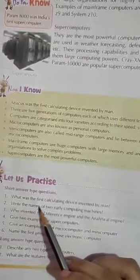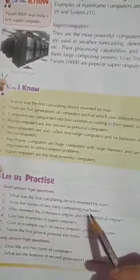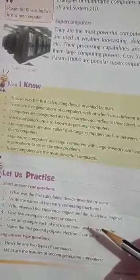Second is, write the names of two early computing machines. Early computing machines, Abacus and Pascaline.